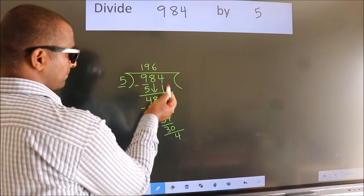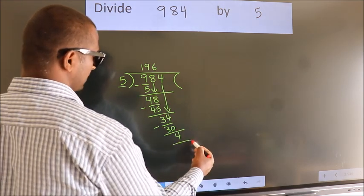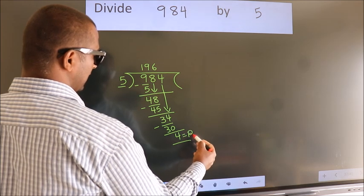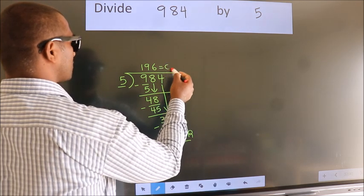No more numbers to bring down. So we stop here. This is our remainder. This is our quotient.